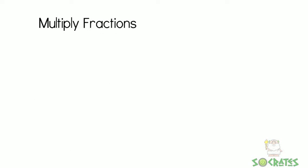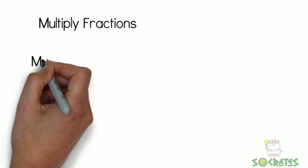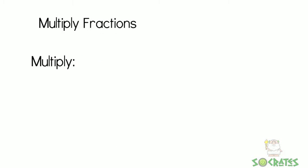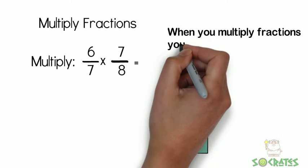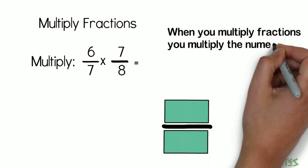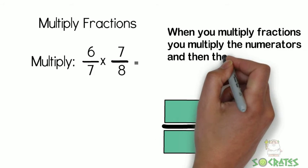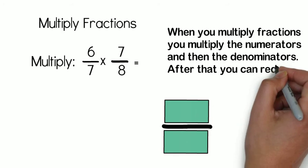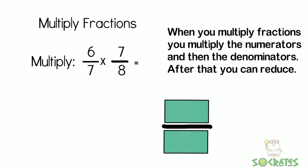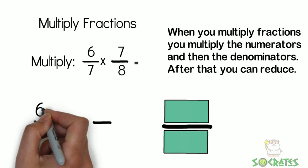Multiply fractions. Multiply 6 sevenths times 7 eighths. When you multiply fractions, you multiply the numerators and then the denominators. After that, you can reduce.